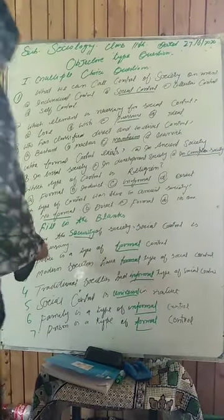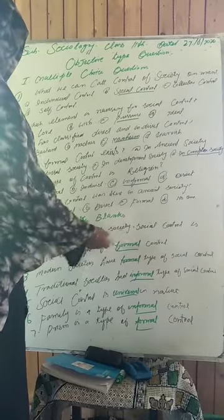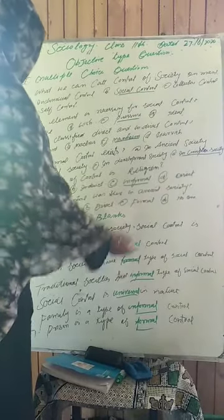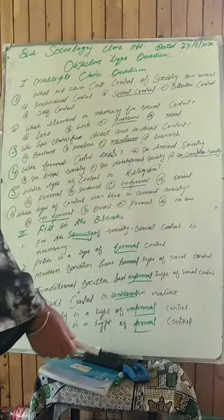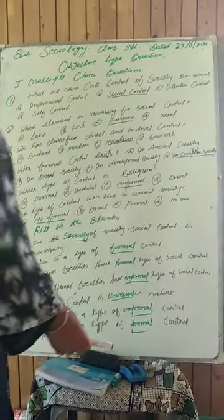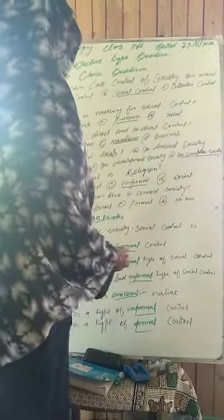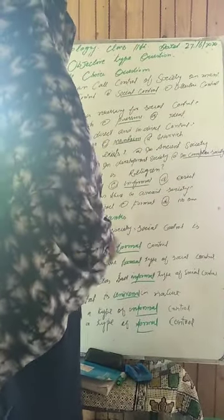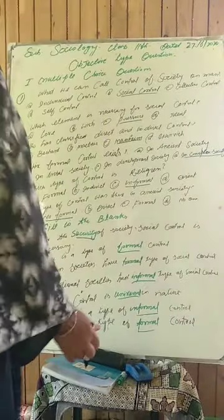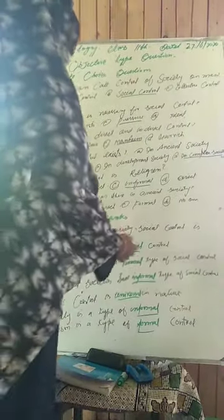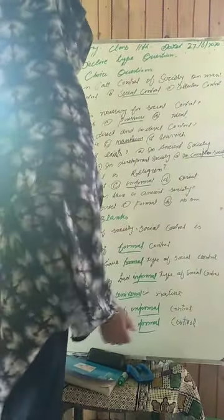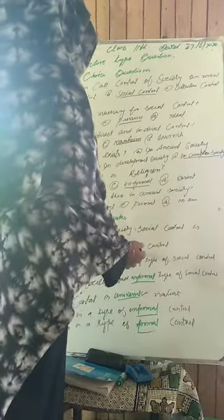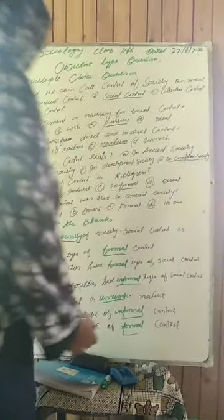Move towards the next one. Police is a blank type of control. Joh police mahkama hai, woh control ka kaunsa type hai? Whether it may be formal, informal, direct, or indirect. Police is a formal type of control. Yeh formal hota hai.